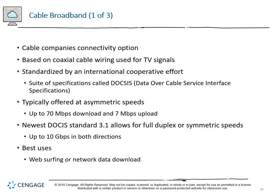Cable companies have their own connectivity option based on existing coaxial infrastructure used for TV signals, standardized under DOCSIS - Data Over Cable Service Interface Specifications. Traditionally, cable broadband operates at asymmetric speeds - 70 megabits download and 7 megabits upload is pretty common. With current services you can get 300 megabits download and 20 upload, with 600 or 800 available as we approach gigabit transmissions. DOCSIS 3.1 is expected to enable 10 gigabits per second full duplex or symmetric speeds.